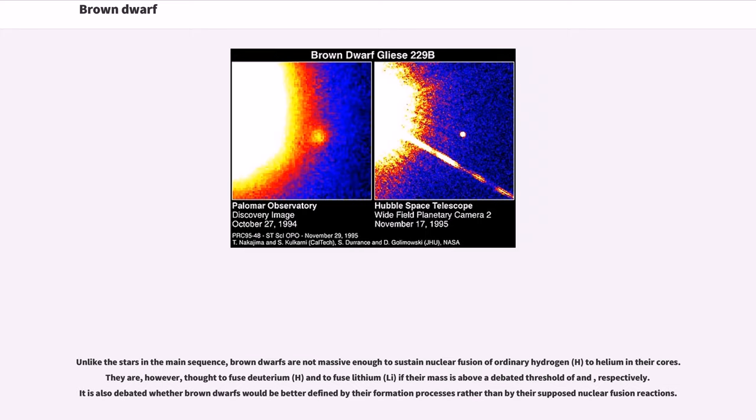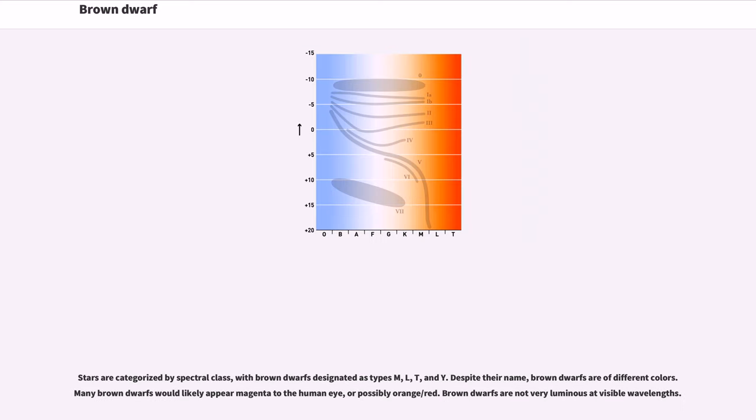Stars are categorized by spectral class, with brown dwarfs designated as types M, L, T, and Y. Despite their name, brown dwarfs are of different colors. Many brown dwarfs would likely appear magenta to the human eye, or possibly orange-red. Brown dwarfs are not very luminous at visible wavelengths.